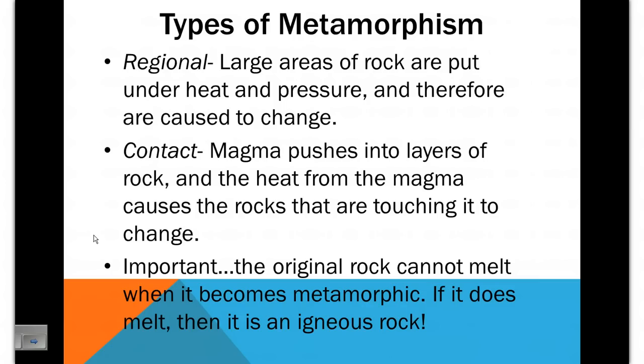Now an important thing with metamorphism is that the original rock cannot melt. If it does melt, it is an igneous rock. So metamorphic rocks do encounter high temperatures but they are not hot enough to melt.